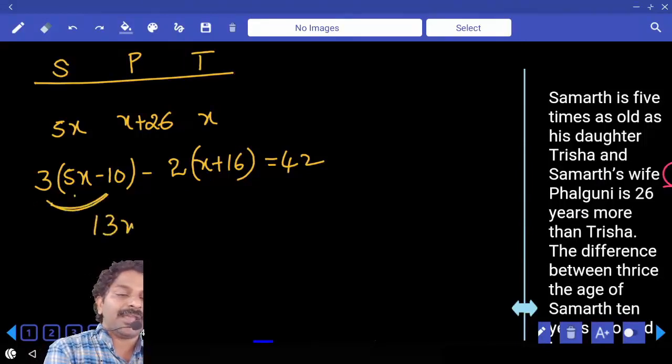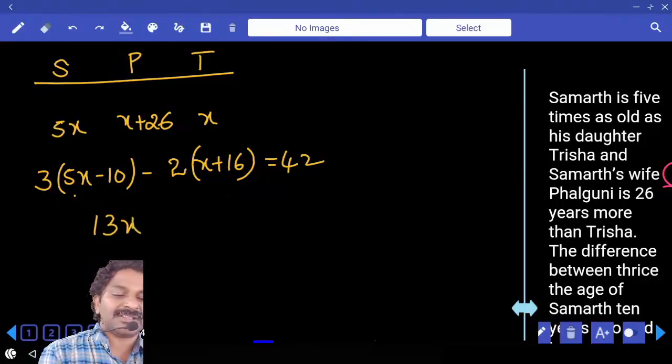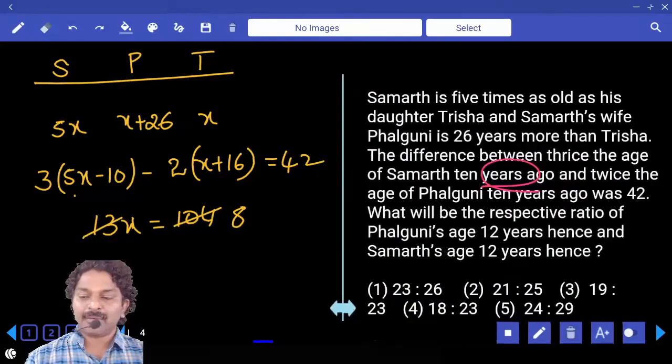13X minus 30 minus 32, minus 62 goes to the other side becomes plus 62, 104. From this X is equal to 8. Now what is your question?